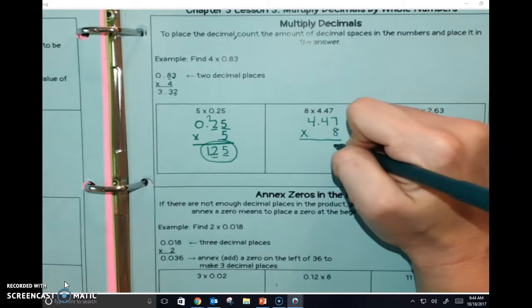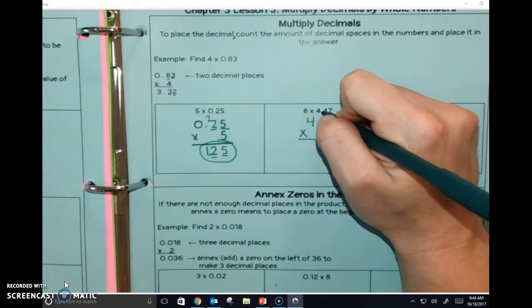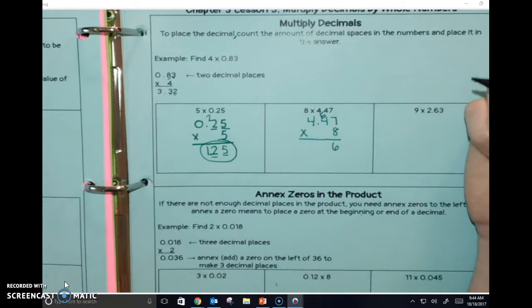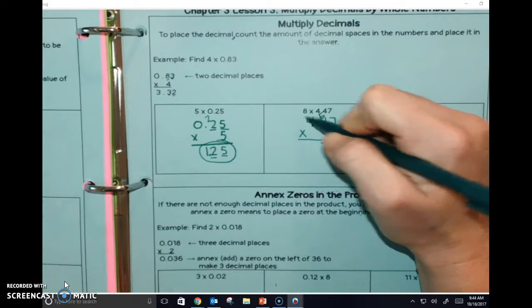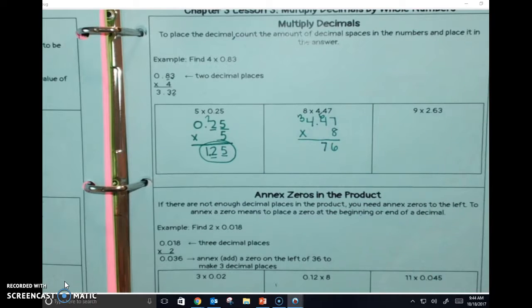So 7 times 8 is 56. 4 times 8 is 32, plus 5 is 37. 4 times 8 is 32, plus 3 is 35.